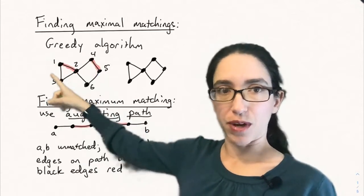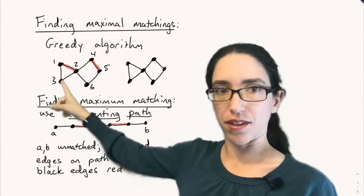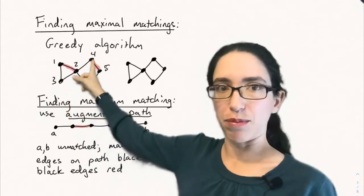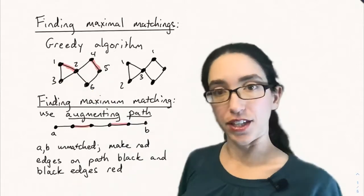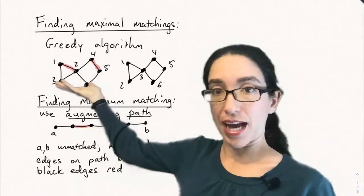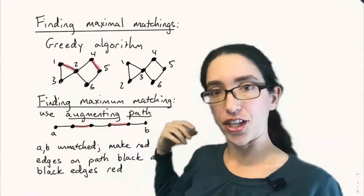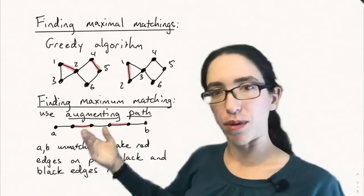And so then the next edge, we couldn't pick anything adjacent to three that would overlap. So you keep searching, you look at things adjacent to four, and four and five would be the next edge you pick. So this would be the matching that you get via that greedy algorithm by just always going for the lowest possible numbers.